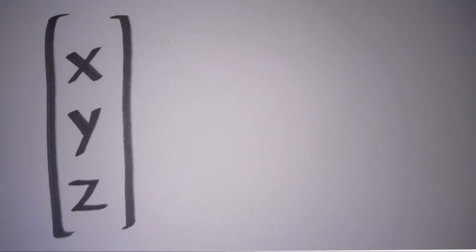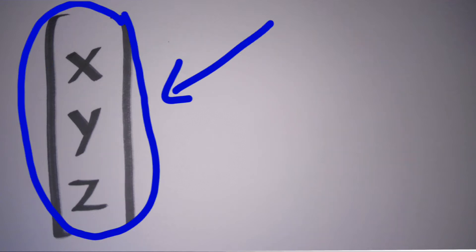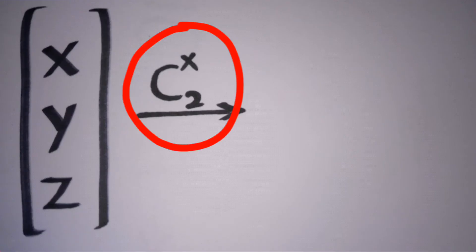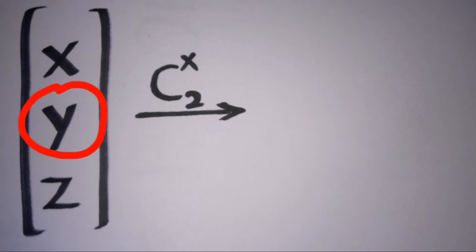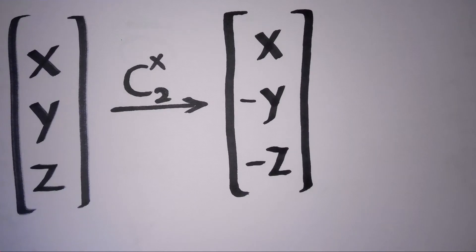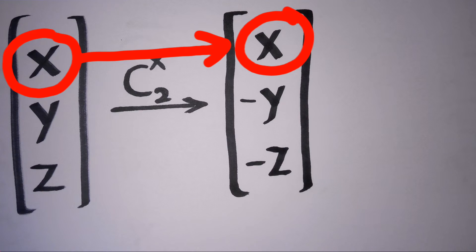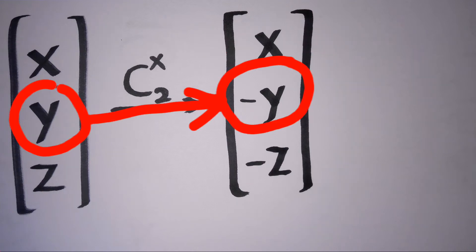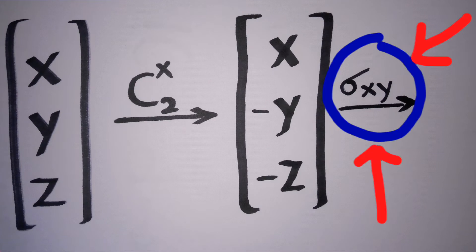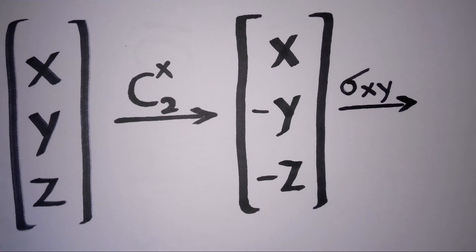Write x, y, and z like this. For a C2x operation, change the sign for y and z. So after the operation we get x, minus y, and minus z. Then the next operation is this.